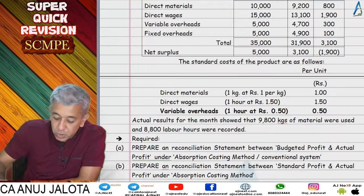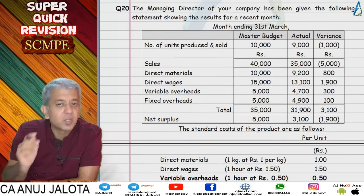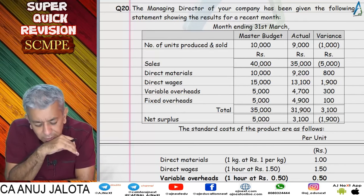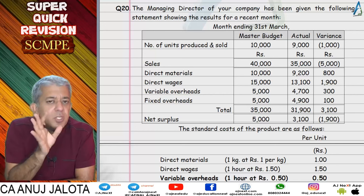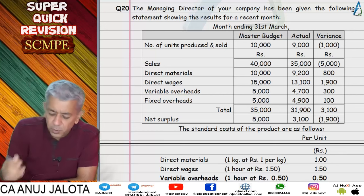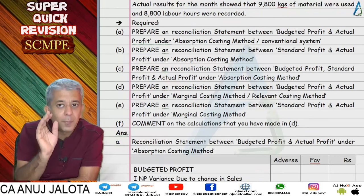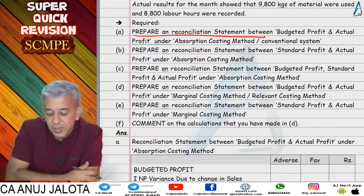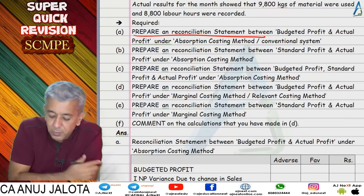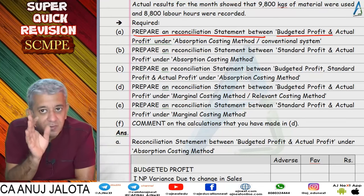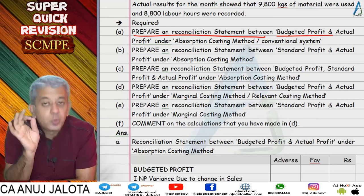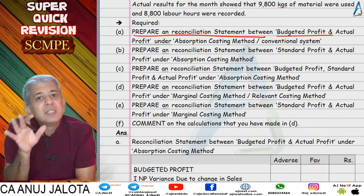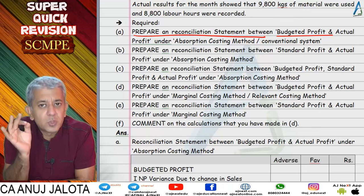Question 20 was our first question solved based on both absorption and marginal costing — almost similar to question 19, except there was no idle time, so it was simpler. The required parts included: Part A — make a reconciliation statement between budgeted profit and actual profit under absorption costing (conventional method). Budgeted profit means the profit we thought we'd earn on day one. Usually, budgeted profit and standard profit mean the same thing.